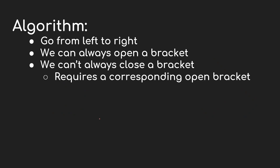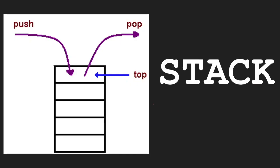The way to think about this problem is to scan the string from left to right. We can always open a bracket — there's no problem with that — but we cannot always close a bracket, because closing requires a corresponding open bracket of the correct type. This type of problem is perfect for the stack data structure, where you push elements on top and pop elements off, with the last element pushed being the first to come off. We use the stack to keep track of the current open brackets that have not yet been closed, as we go through the characters of S from left to right.